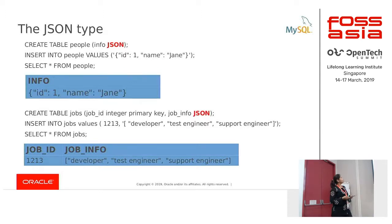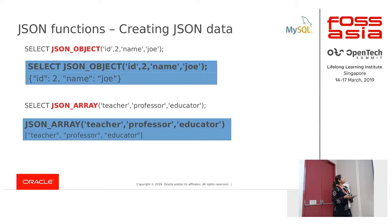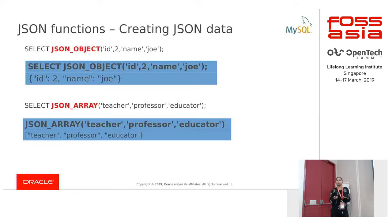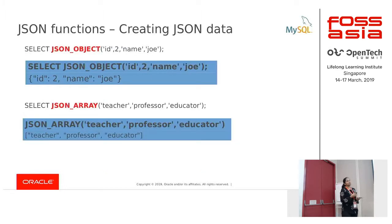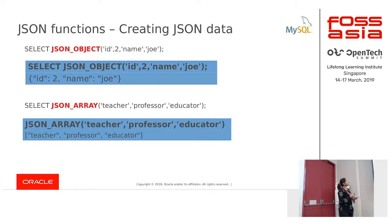Now we look into the JSON functions. There are plenty of functions; I'll touch on a couple to create, modify, and query JSON data. As you saw in the previous slide, you can insert JSON data directly, or you can use the JSON_OBJECT and JSON_ARRAY functions. JSON_OBJECT takes in a list of key-value pairs, validates the data, and creates a JSON output. Similarly, JSON_ARRAY takes a list of values and creates a JSON array output.